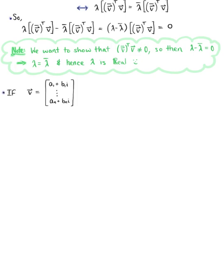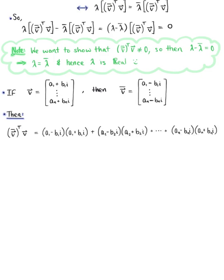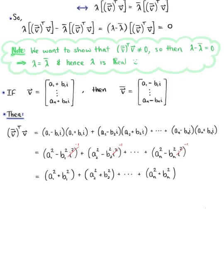If we let vector v have components a₁ plus b₁i through aₙ plus bₙi, then v-bar has components a₁ minus b₁i through aₙ minus bₙi. Taking the dot product of v-bar-transpose with v, simplifying those products and keeping in mind that i squared equals negative one, we are left with the sum a₁² plus b₁² plus a₂² plus b₂² plus all the way up to aₙ² plus bₙ², which cannot equal zero since v cannot be the zero vector, as it is an eigenvector.